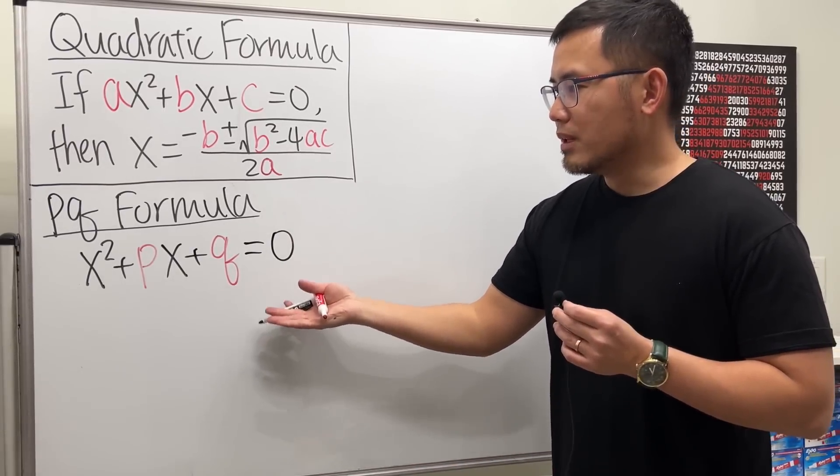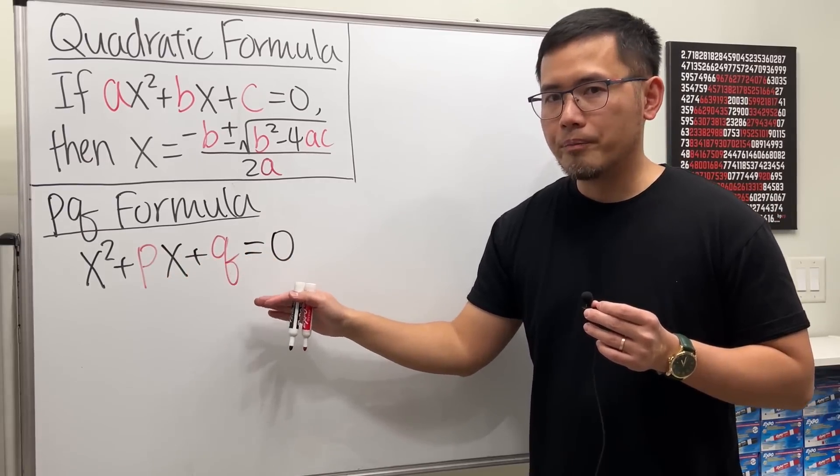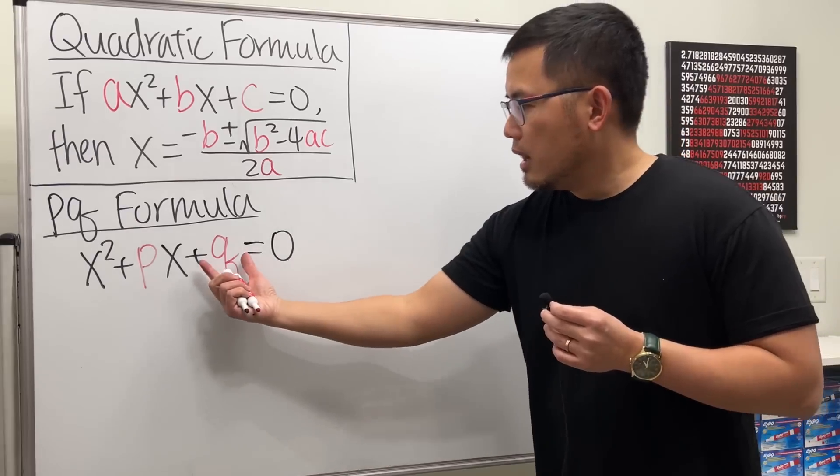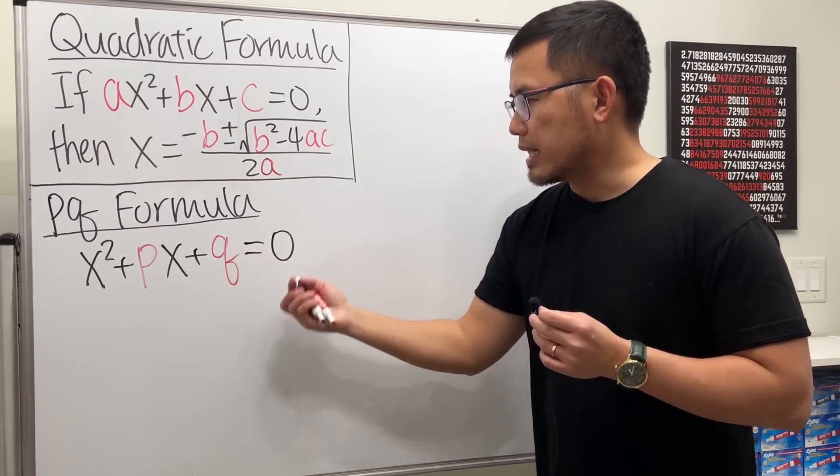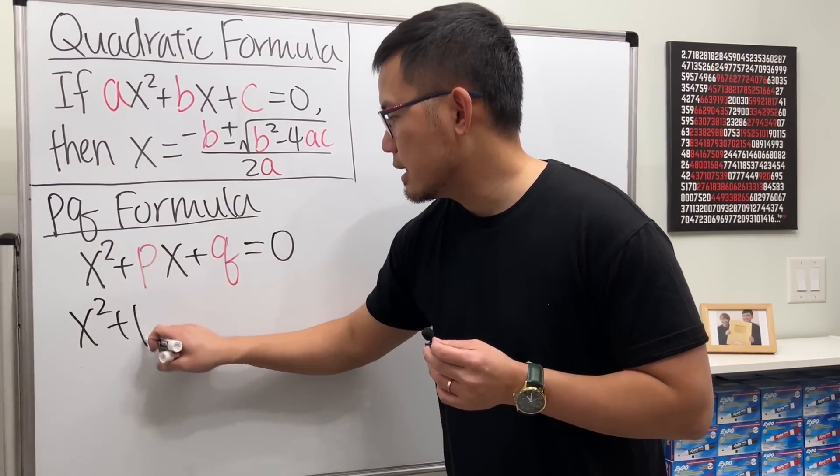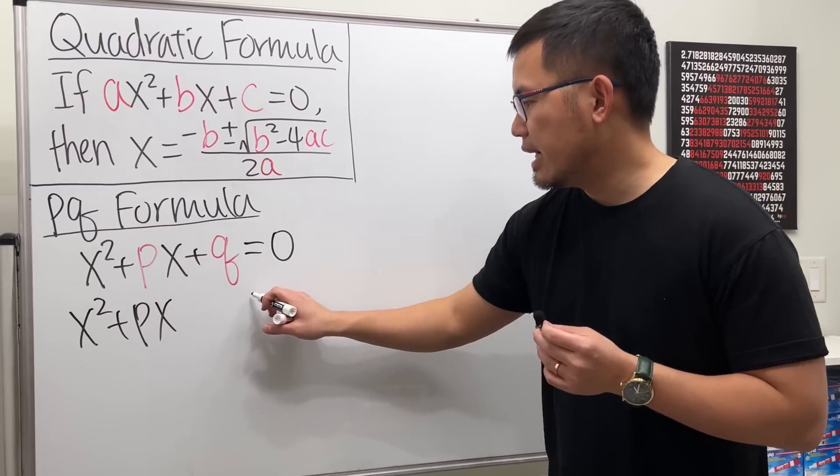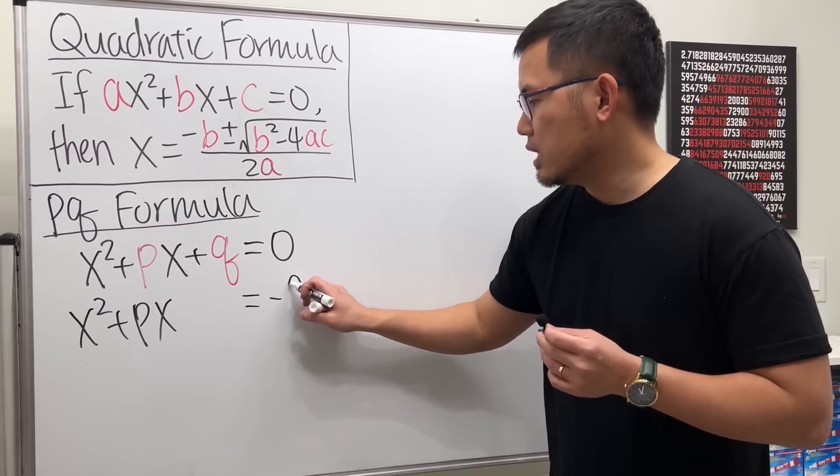So, let's derive a formula for this particular form. To do so, let's first move this number to the other side. So, we have x squared plus Px, and then that's equal to negative Q.